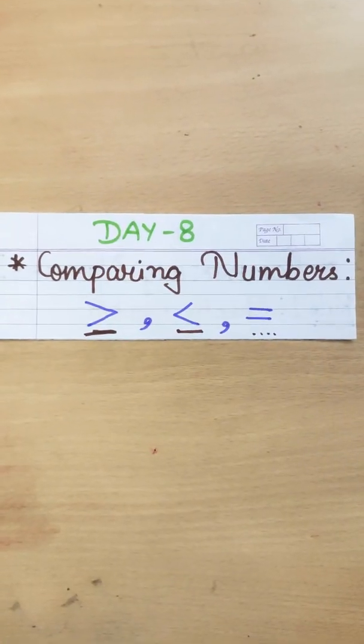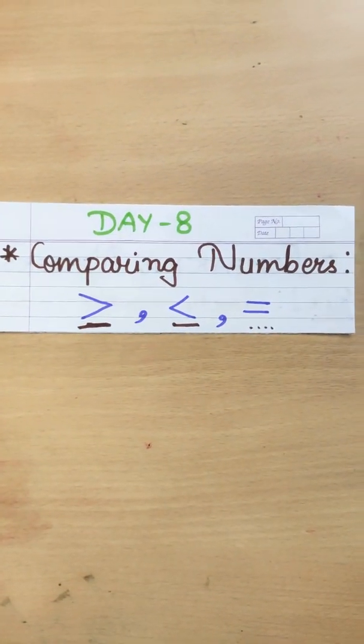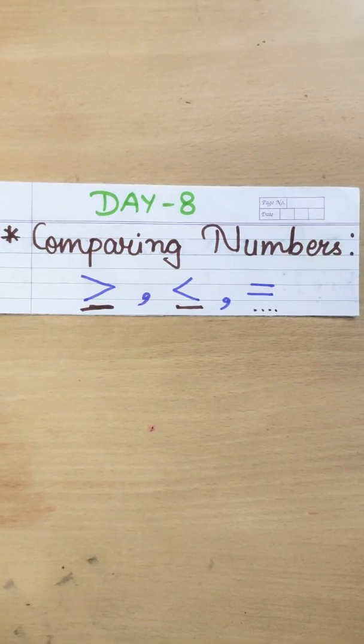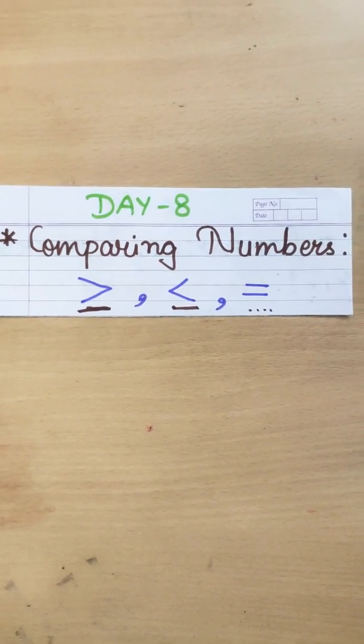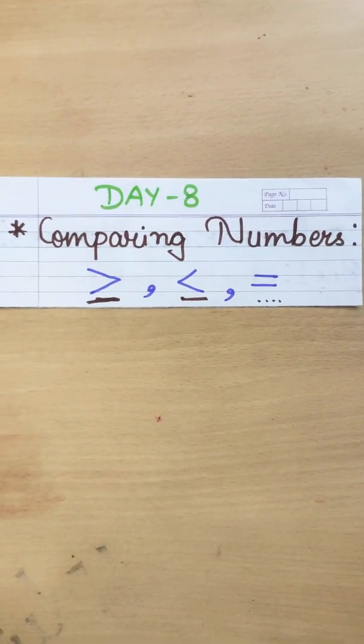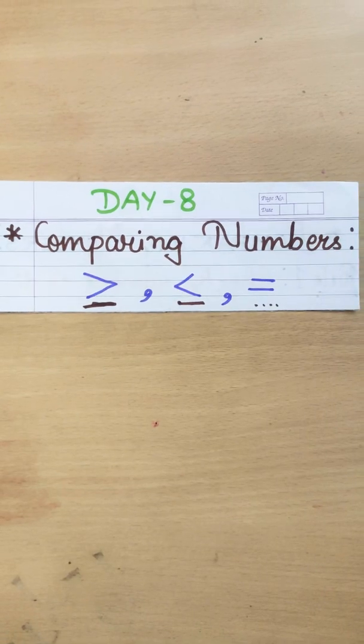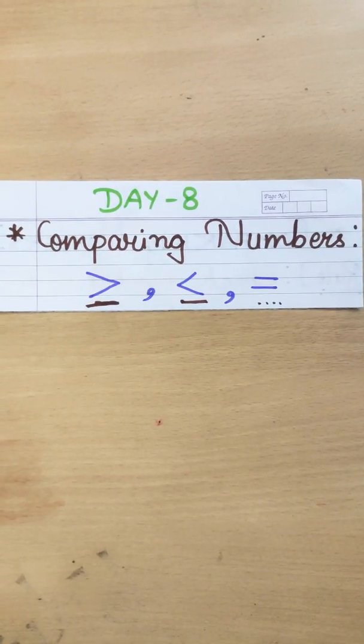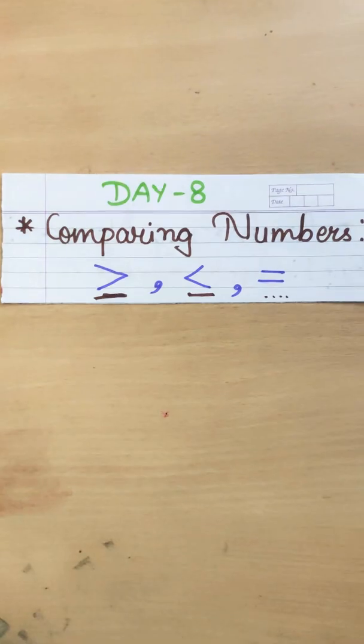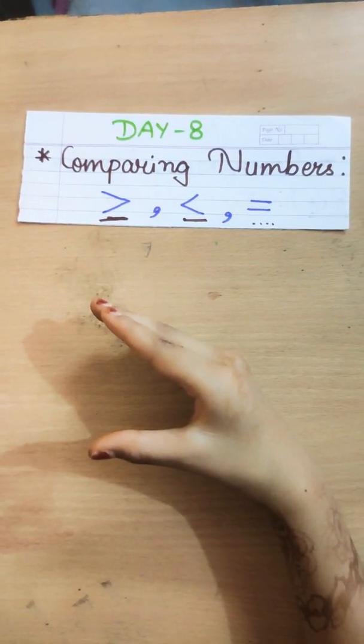So, here while comparing our numbers, we have to use different symbols. The first one symbol belongs to greater one. The second one, smaller one. And then the third one is equal to sign. So, does this symbols resemble anything? Yeah, I know. These resemble the mouth of a crocodile. So, here comes our crocodile with its mouth.